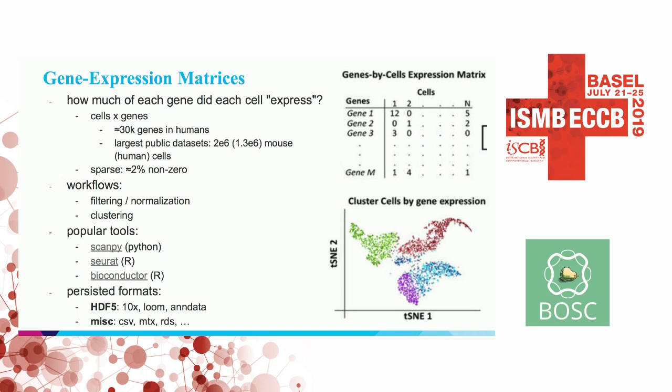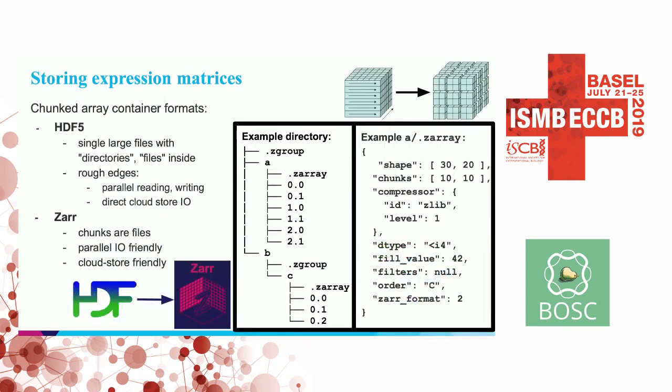There are a wealth of tools in Python and R that are popular and people use that do this effectively, but they can struggle with the increasingly large dataset sizes. The data is often persisted in various text-based formats or different schemas embedded in HDF5. One of the first things we did to scale these analyses better was to use an alternative to HDF5 called Zarr.